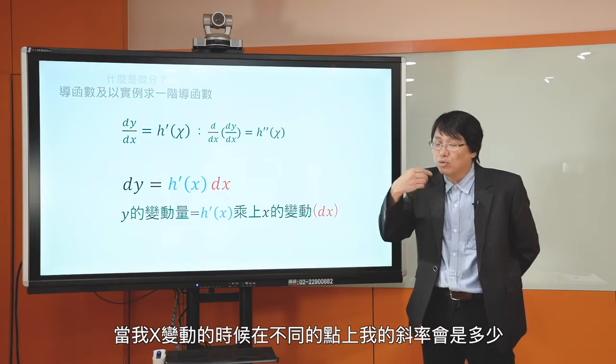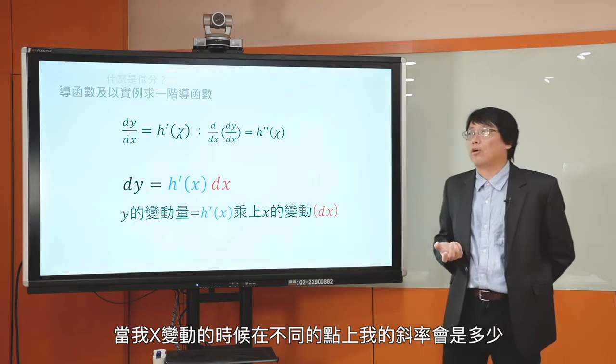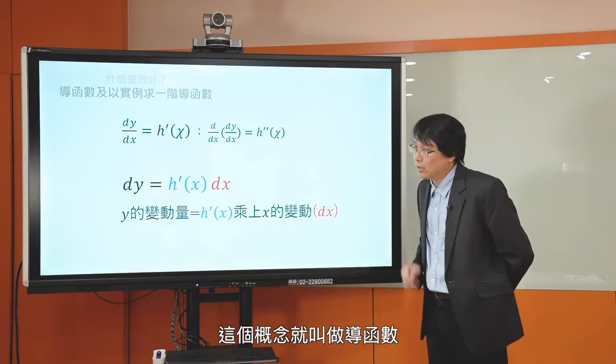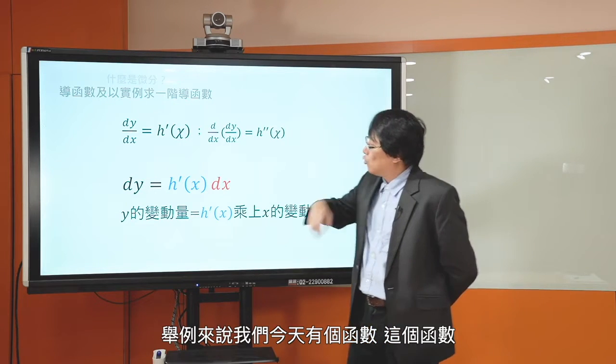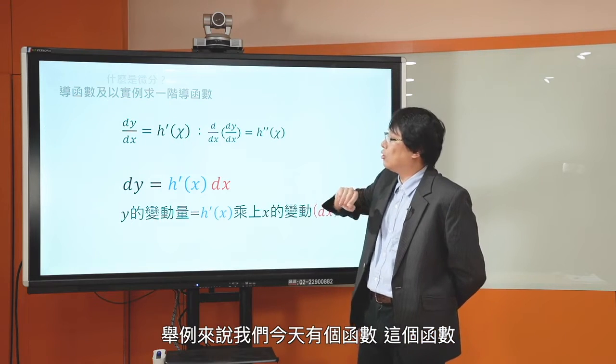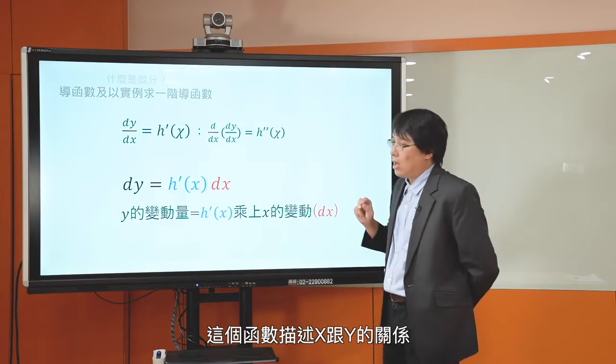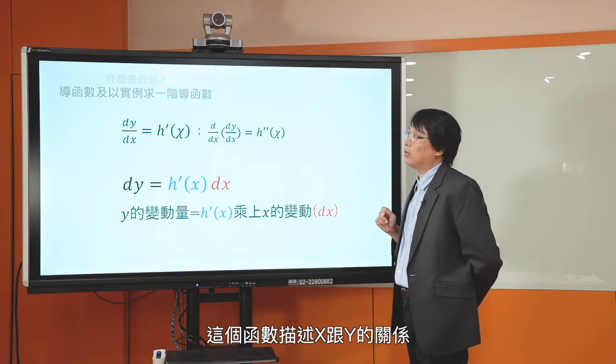那这个东西就是求微分的概念。因为在非线性函数的时候各点的斜率都不一样，所以我们对于某一个特殊的点的斜率兴趣比较不大，因为斜率会随着X变动而变来变去。这时候你会有兴趣的是：可不可以找到一个公式或函数，描述当X变动的时候，在不同的点上那个斜率是多少？这个概念就叫做导函数。